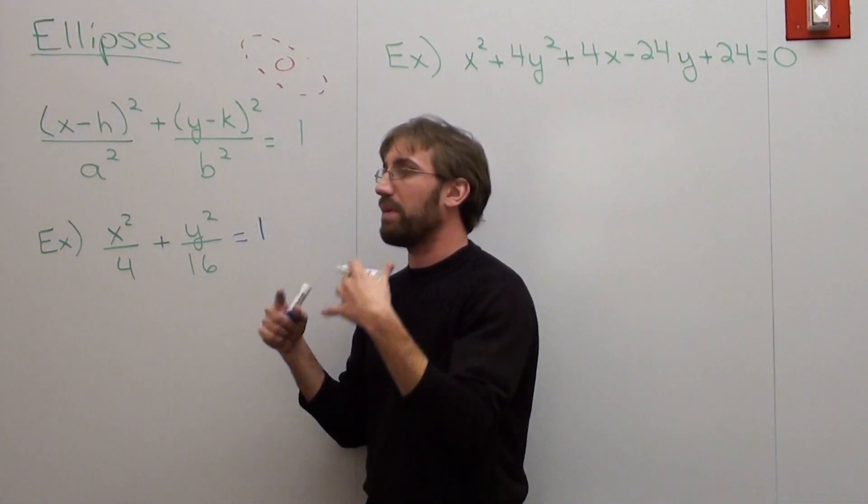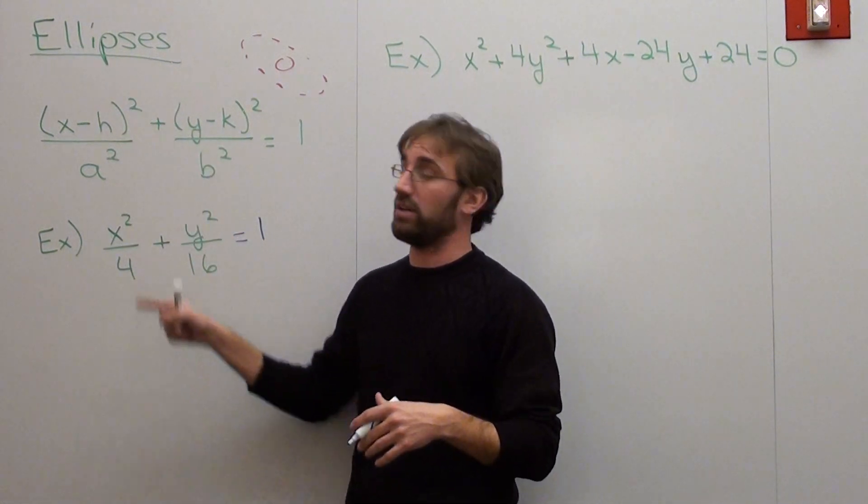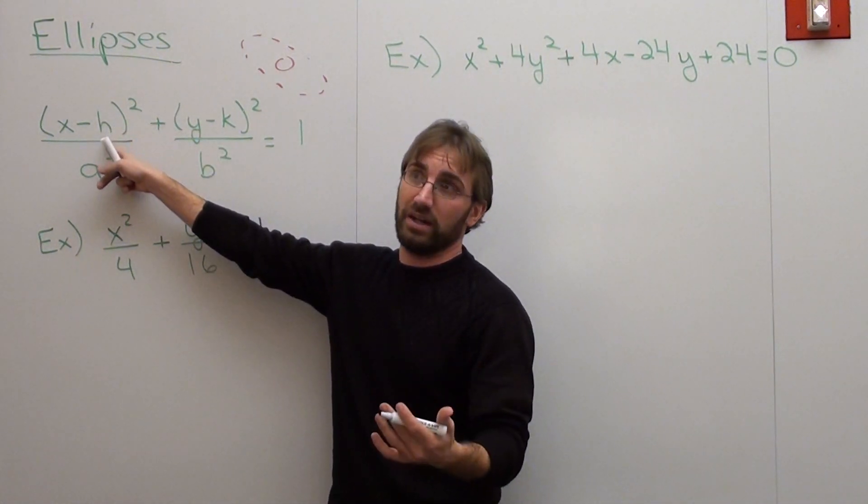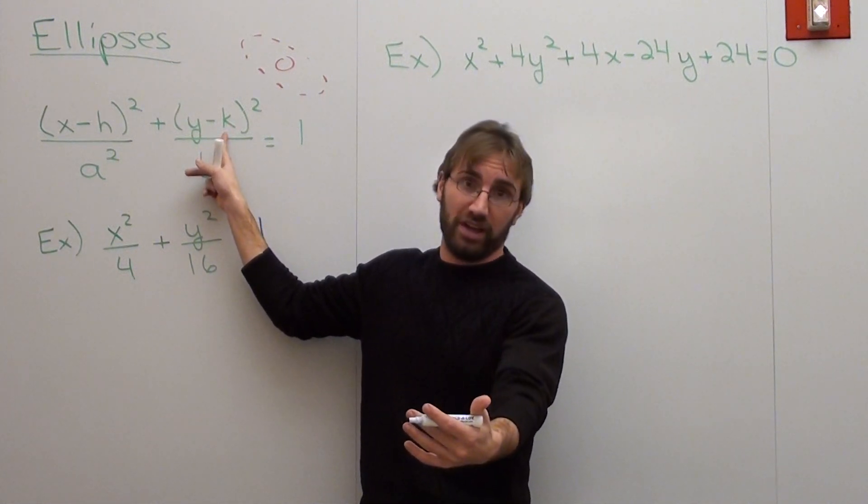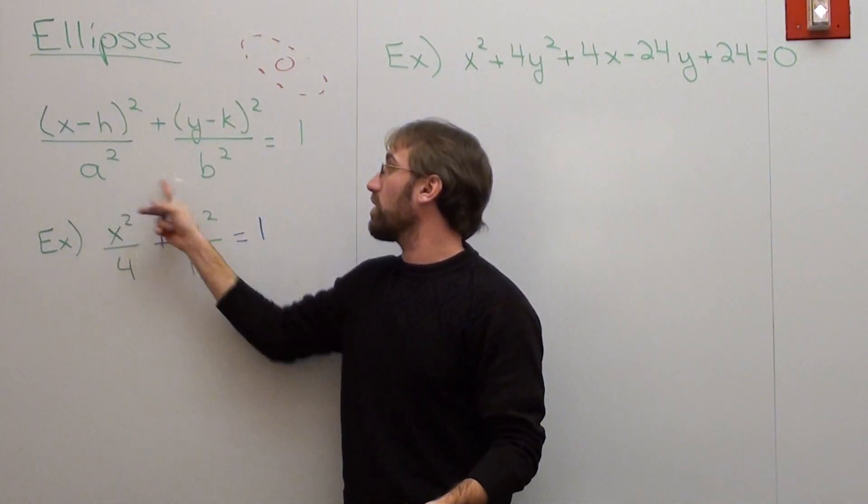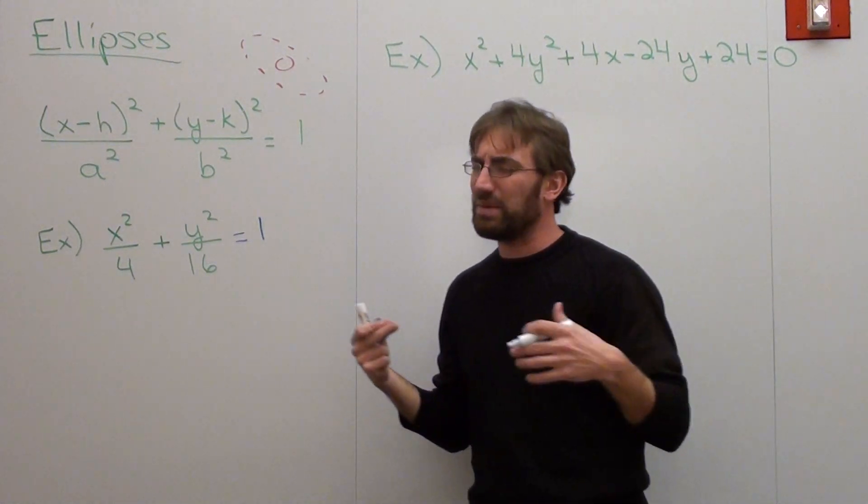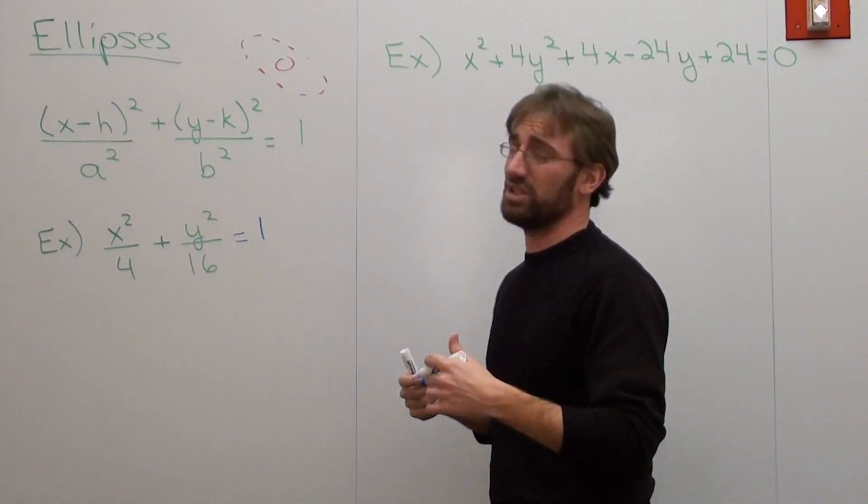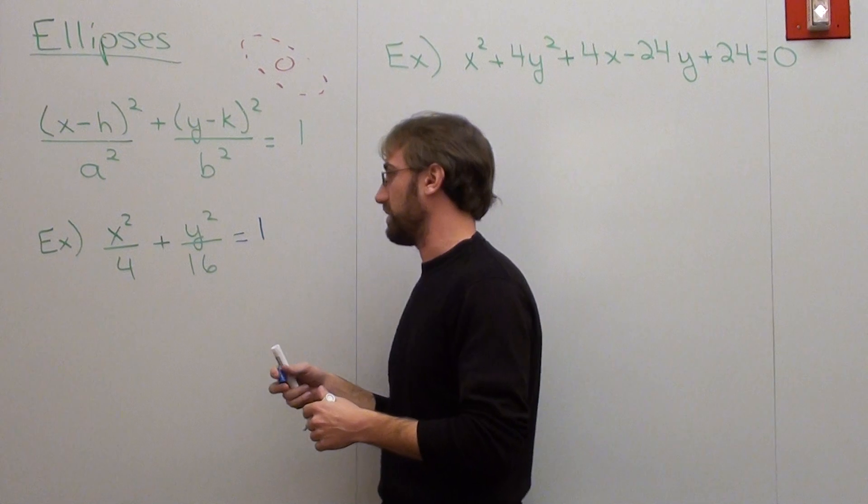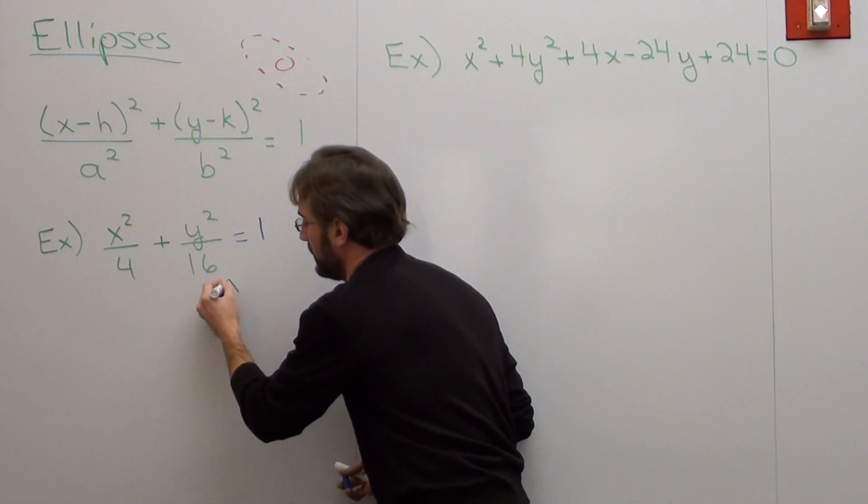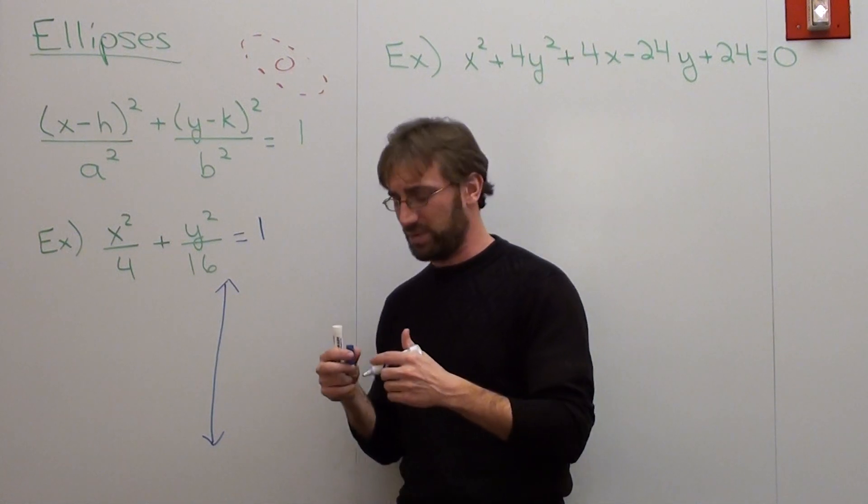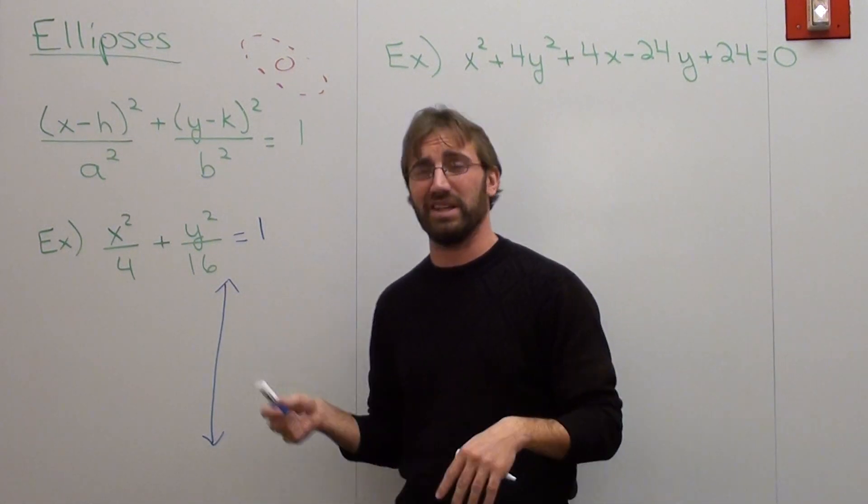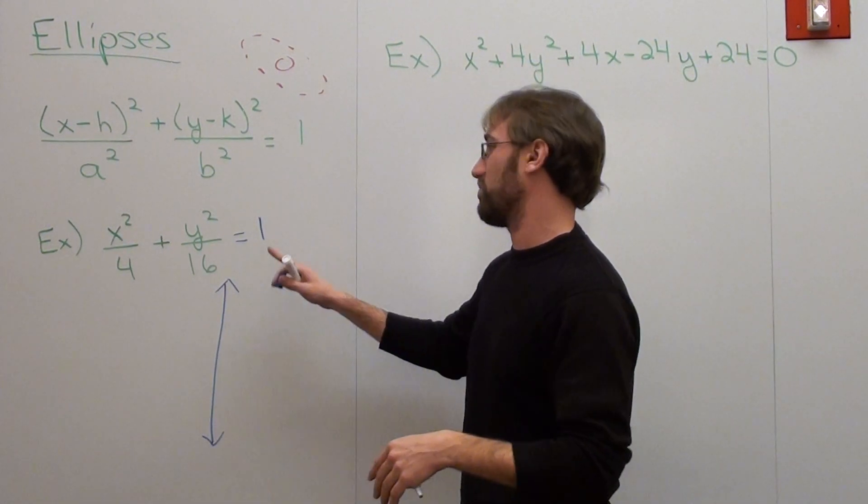Basically h and k stand for the center. h stands for the x spot, the x value for the center, and k stands for the y value of the center. And a² and b² determine how it looks. But let me go ahead and explain it because it's just so much easier if I do. You don't really have to think about it like that. It's really quite easy.